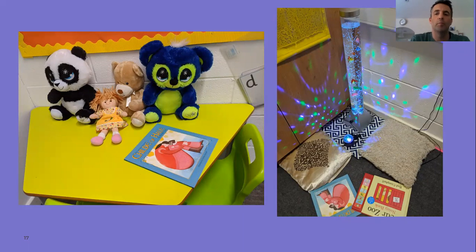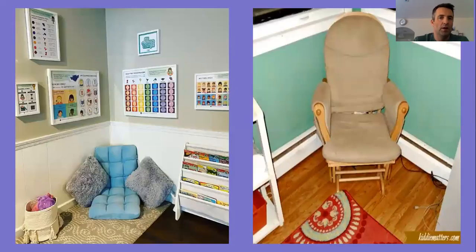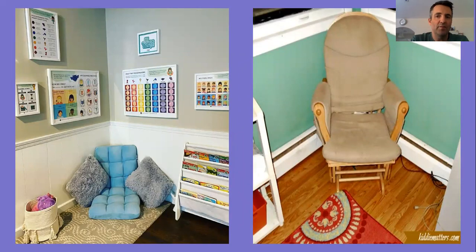Here are some examples of cool down corners. The one on the left has a book, a nice yellow table with a chair, and some favorite teddies. The one on the right has a nice lamp with bubbles, some comfy cushions, and books. A couple more examples show somewhere to lay or sit, teddies, and books. Even if you've just got a chair, that's still an area you can go to safely to deal with your anger.